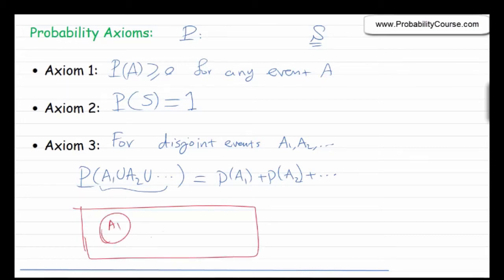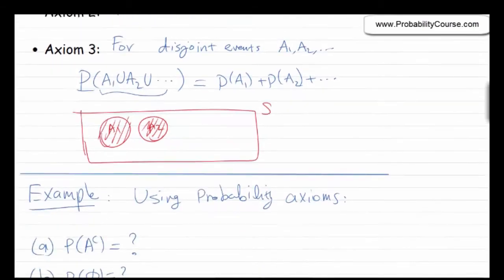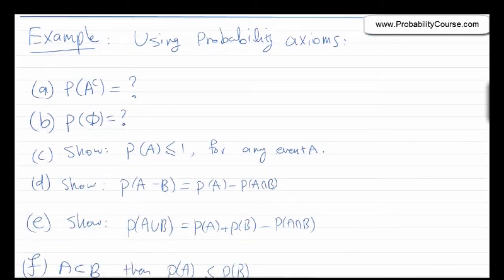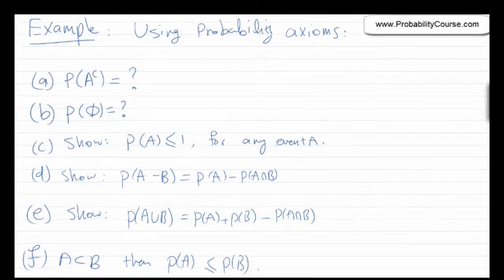These are very simple axioms, but it turns out all of probability theory is based on them, so they are very important. We need to use them to prove results and obtain probabilities. We will see more examples later on how to find probabilities for actual problems, but for now I just want to practice these axioms by using them to show some properties of probabilities.